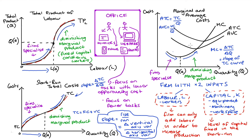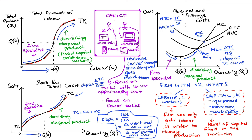Students often get confused about why ATC and AVC only start rising once marginal cost becomes higher than them — not simply when marginal cost starts increasing. The mistaken intuition is that if marginal cost is rising, average costs should rise too. But what matters is whether marginal cost is above the average, not whether it is increasing. This means marginal cost passes through the minimum points of both average cost curves. I have another video linked below covering this logic in more detail.